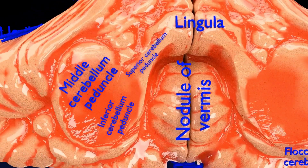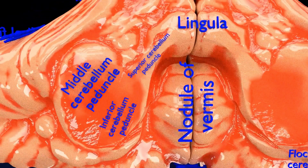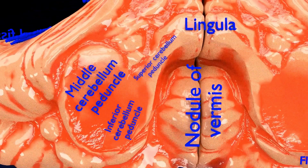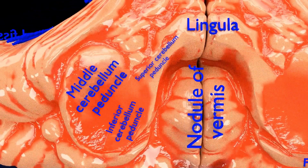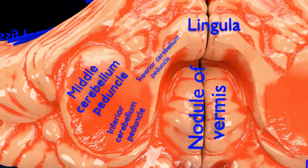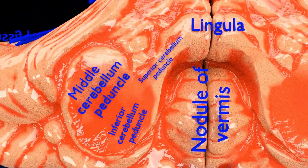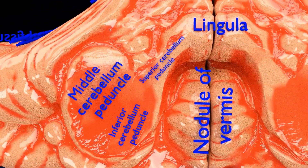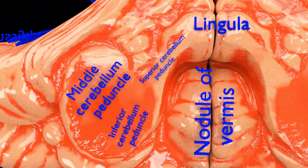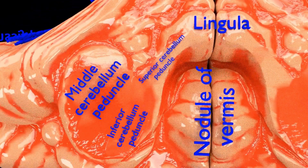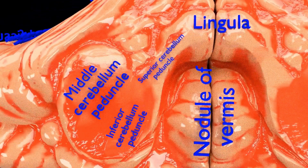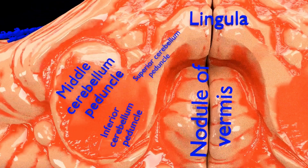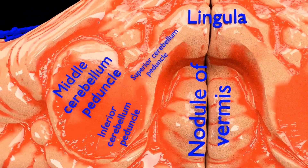Output from the inferior peduncle is via efferent fibers to the vestibular nuclei and the reticular formation. The whole of the cerebellum receives modulatory input from the inferior olivary nucleus via the inferior cerebellar peduncle.